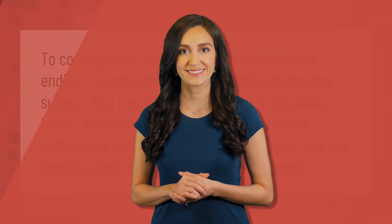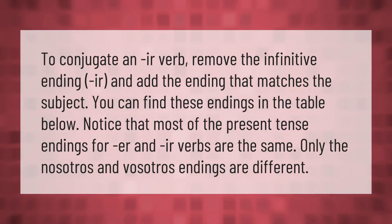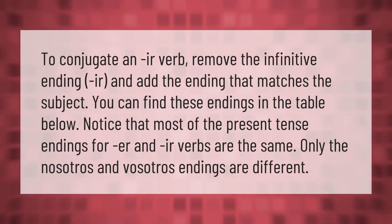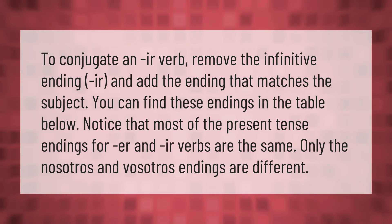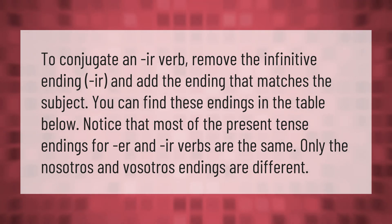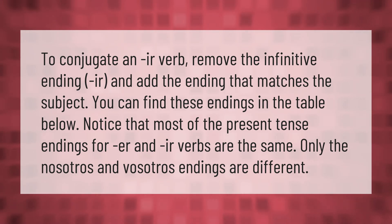To conjugate an -IR verb, remove the infinitive ending -IR and add the ending that matches the subject. You can find these endings in the table below. Notice that most of the present tense endings for -ER and -IR verbs are the same — only the nosotros and vosotros endings are different.